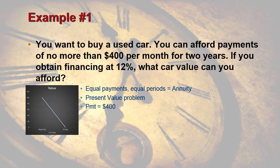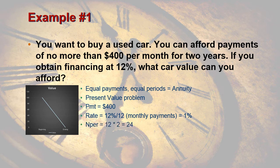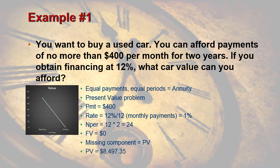Now we've just got to fill in the components that we know. We know the payment is $400. We know the rate is going to be 1% because we're making 12% monthly payments — 12% is an annual rate, and when we drill it down to a monthly rate it's 1%. Number of periods: we're making monthly payments for two years, so 12 times 2 is 24. Our future value is nothing, so that leaves our missing component to be present value. When we plug all this into Excel, we figure out the present value of the car we can afford is $8,497.